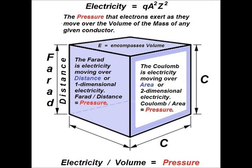Here we're using a simple cube, because electricity is three-dimensional. To prove this, if we divide the one equation for electricity, qa squared z squared, by one dimension, that will give us electricity moving over two dimensions. So if we divide qa squared z squared by az squared, which is distance, that will give us electricity flowing over the cube, but only flowing over a side of the cube, or area.